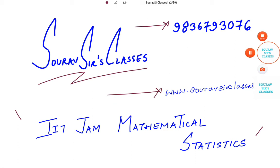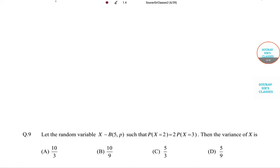This is Question 9. The question is: Let random variable X follow binomial with n=5 and p, such that P(X=2) = 2P(X=3). We need to find the variance of X. So let's do it. The condition given is P(X=2) = 2P(X=3).